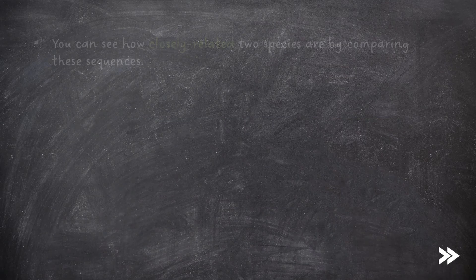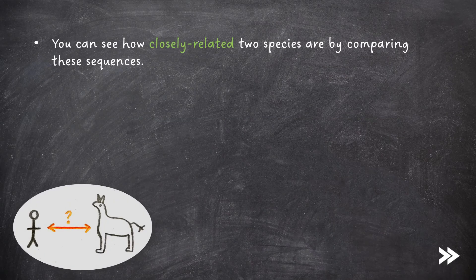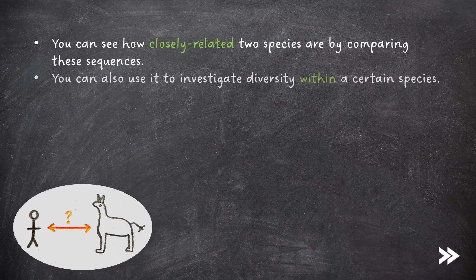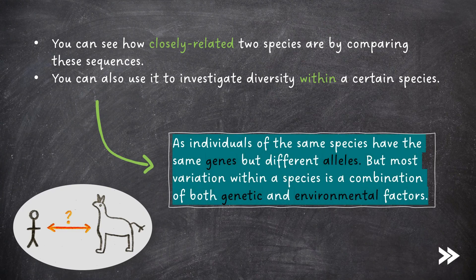You can see how closely related two species are by comparing these sequences. You can also use it to investigate diversity within a certain species, because individuals of the same species have the same genes but different alleles. However, most variation within a species is due to a combination of both genetic and environmental factors.